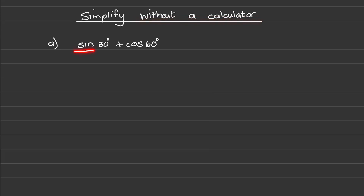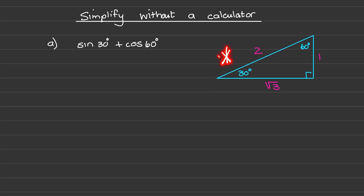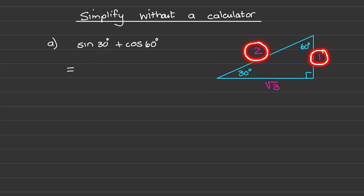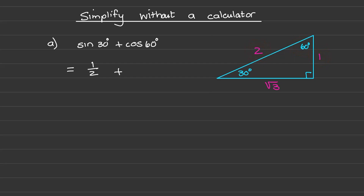First we have sine of 30 plus the cosine of 60. The special triangle I need is the one with 30 and 60 degrees in it. From the special triangle we know that the sine of 30 is one half, and the cosine of 60 is also one half. A half plus a half is equal to one.